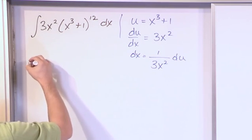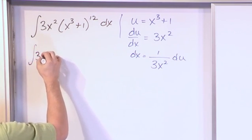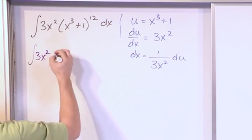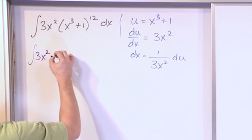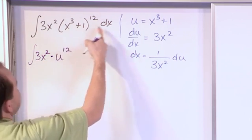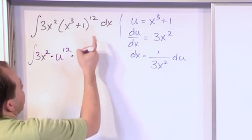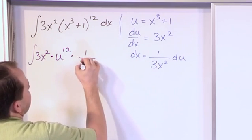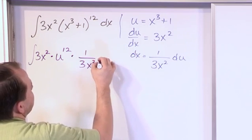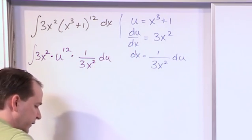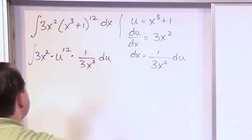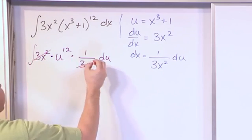So let's see what happens. We have the integral of 3x squared. This resolves to u to the 12th power because this is what we defined to be equal to u. And then for dx, we have 1 over 3x squared du. So it's certainly looking good. 3x squared cancels with 3x squared.